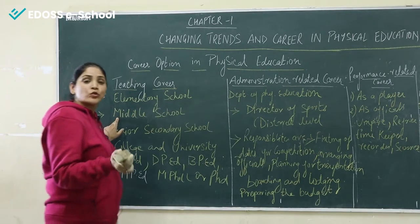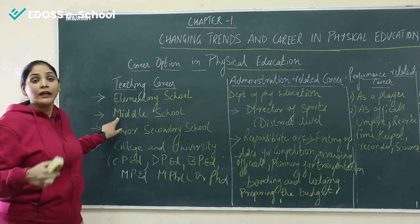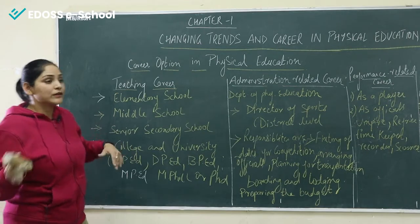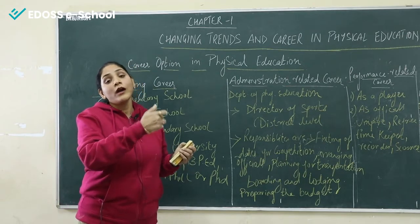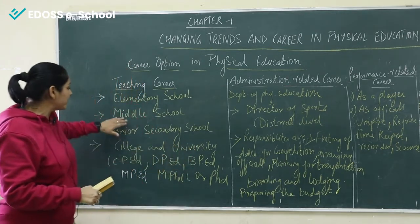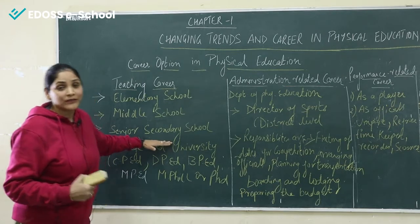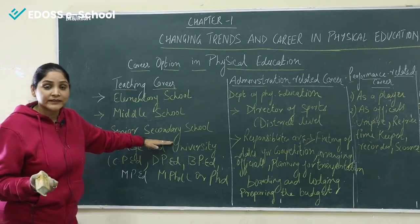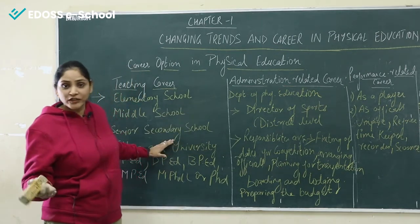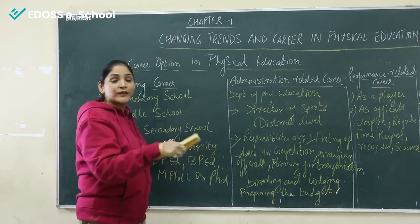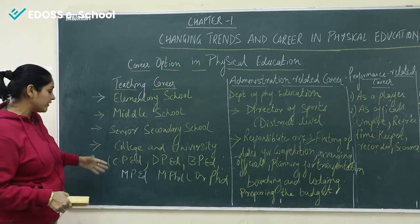The second teaching level is middle school, which covers Classes 6 to 8, where we can build team spirit, develop leadership qualities, and children can get involved in specific sports skills. We can also make a career in physical education at the senior secondary school level, which is Classes 11 and 12 — in teaching, coaching, team building, as a physical education teacher, or as a physical education trainer. At the college and university level, we can also teach and there are courses such as CPA (Certified Program in Physical Education), diploma in physical education after Class 12, BPEd after graduation, and Bachelor in Physical Education.